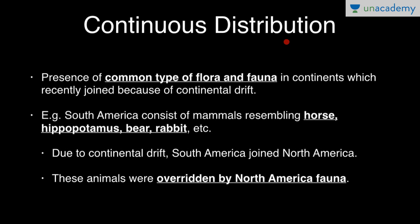Continuous distribution refers to the presence of common types of flora and fauna in continents that recently joined due to continental drift. For example, South America had mammals resembling horses, hippopotamuses, bears, and rabbits. Due to continental drift, South America joined North America, and these animals were overridden by the North American fauna.